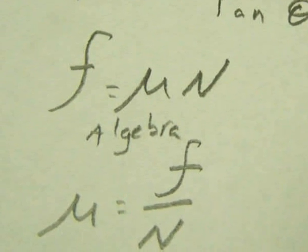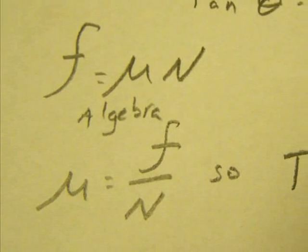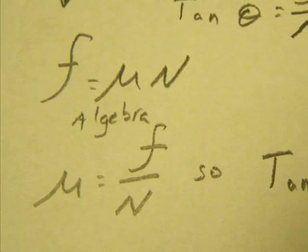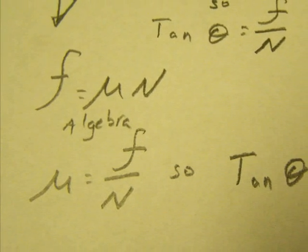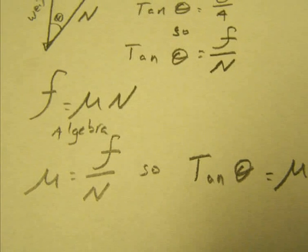The more astute will notice a similarity here. If the coefficient of friction equals F over N, and the tangent of angle equals F over N, then the tangent of the angle also equals the coefficient of friction.